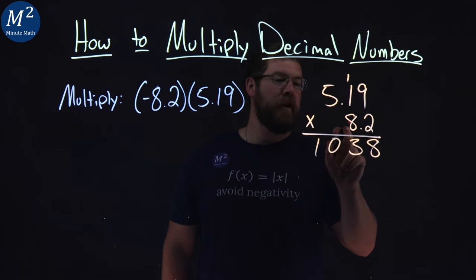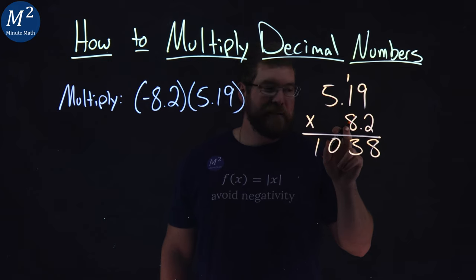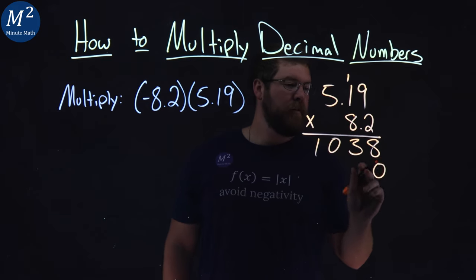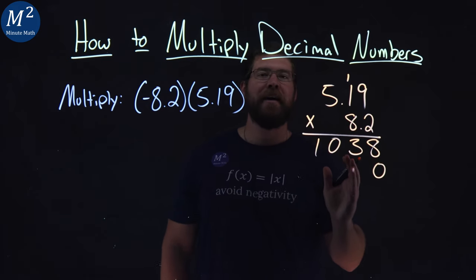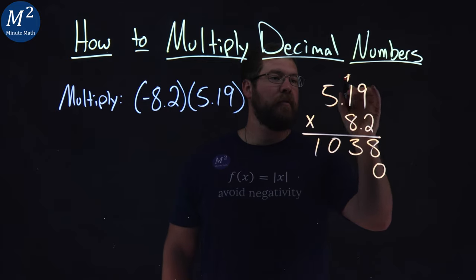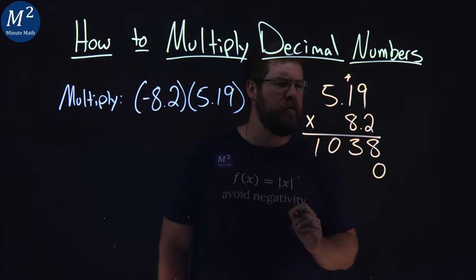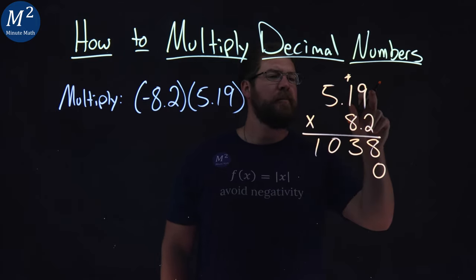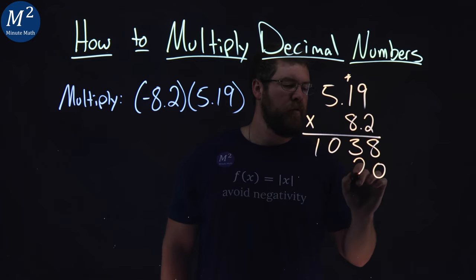Now we have the next place value over, which is the 8. Put a 0 here to give me my place value over, and now I do the same process. I'm going to cross off that 1 here so we don't get confused. 8 times 9, 72. 2 here,